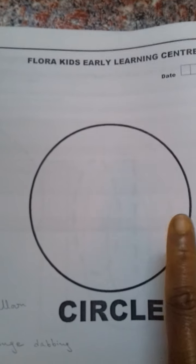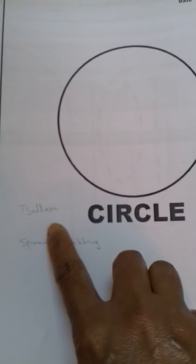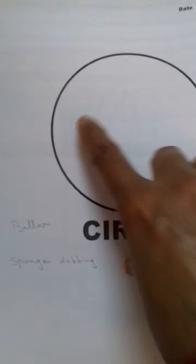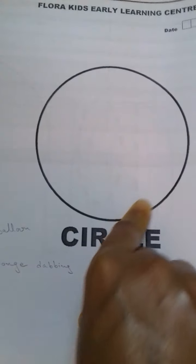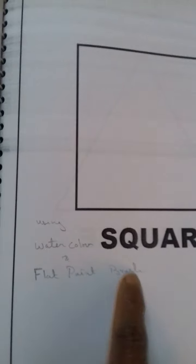You can give balloon or sponge dabbing and ask the child to colour the circle. Then for square you can use watercolours and flat brush.